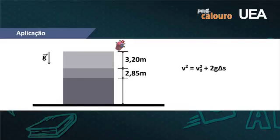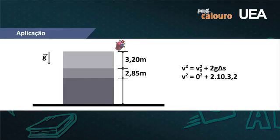Temos dois trechos: a velocidade final do primeiro trecho é a velocidade inicial do segundo. Qual velocidade o vaso tinha ao começar a passar pelo andar de 2,85 m? Como não temos o tempo, recorremos à equação de Torricelli: V² = V₀² + 2gΔS. A velocidade inicial é zero; o espaço percorrido no primeiro trecho é 3,2 m. Calculando: V² = 0 + 2 × 10 × 3,2 = 64, portanto V = 8 m/s. Esta é a velocidade com que o vaso inicia o segundo trecho.